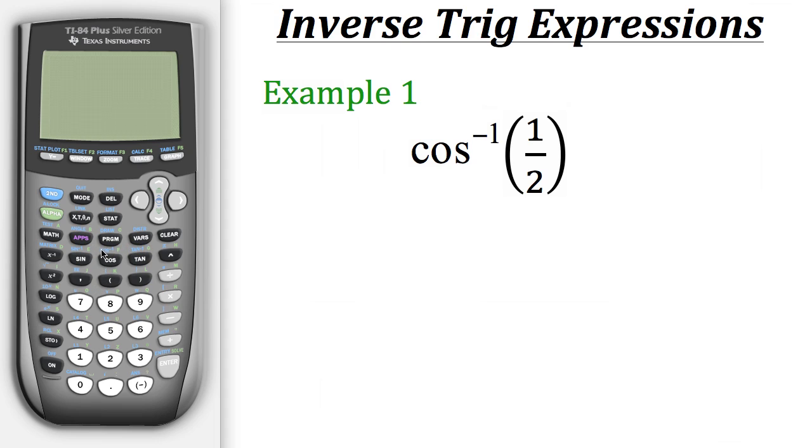So in this case, we want to use the blue lettering above our cosine button, which has our label for the inverse cosine. So in order to get to that feature, we need to hit second cosine. From here we can see that we have the cosine to the negative 1, expressing that it's the inverse cosine. Now we just need to put in 1 half. So 1 divided by 2, and then close the parentheses.